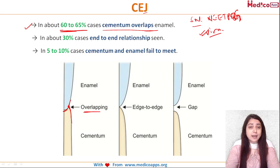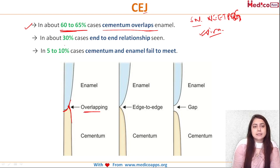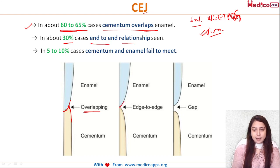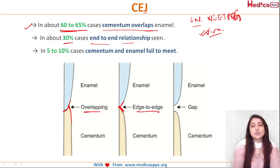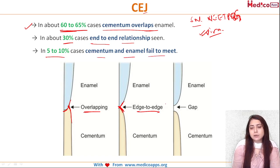Yes, there are three types of CEJ. First is the overlapping type. Second, in about 30 percent of cases, it is an end-to-end relationship — enamel ends here and cementum also ends here, so this is edge-to-edge or end-to-end. Third, in around 5 to 10 percent of cases, cementum and enamel fail to meet, so there is a gap.